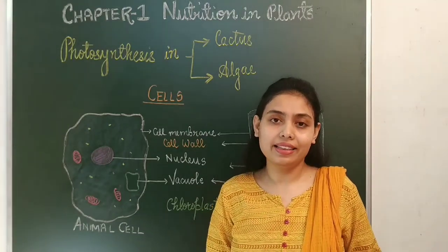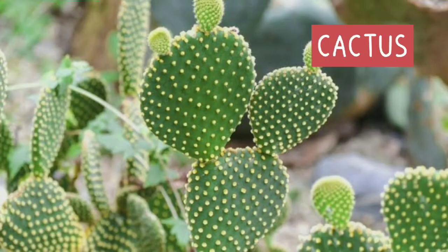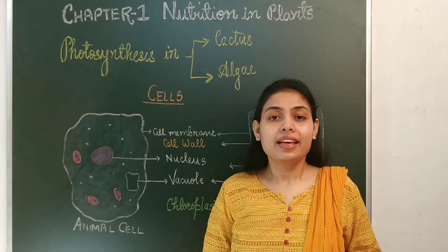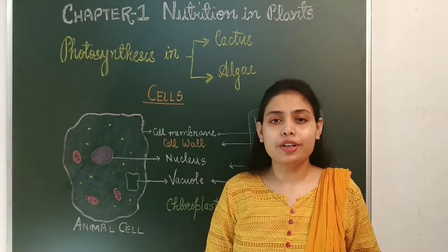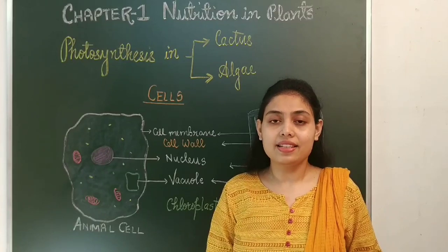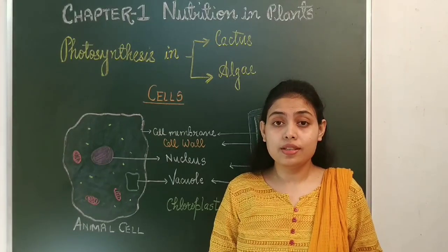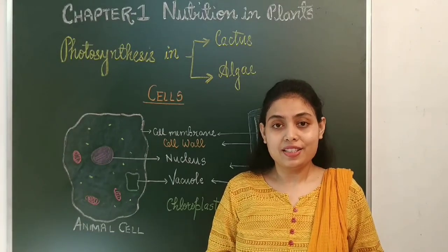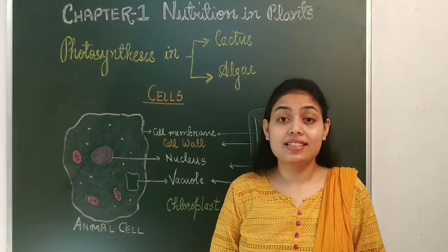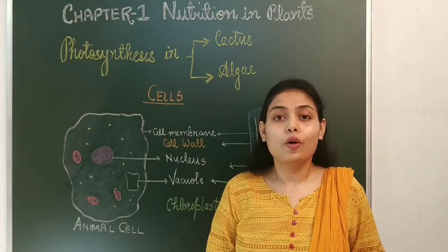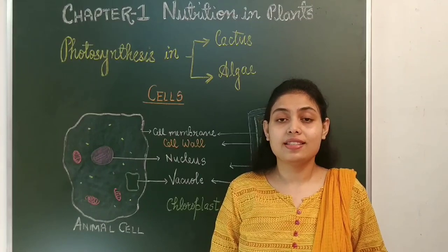Photosynthesis in cactus and algae. Let us check the picture of cactus. Cactus is a desert plant and the leaves of the cactus plant are converted into spines just to reduce water loss, as in the desert there is a scarcity of water. How does cactus perform photosynthesis? In cactus, photosynthesis is performed by the green stem. That means in cactus, chlorophyll is present in the stem, and because of the presence of chlorophyll, the stem performs photosynthesis.